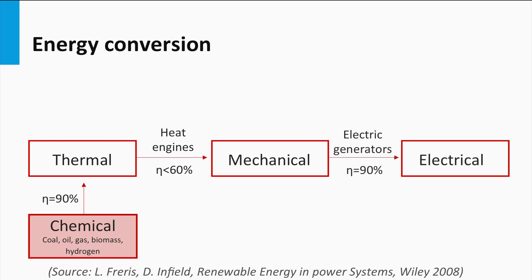Mechanical energy can be converted into electricity using electric generators, with an efficiency of 90 percent. This shows that in all process steps of making electricity out of fossil fuels, at least 50 percent of the initial available chemical energy is lost in the various conversion steps.